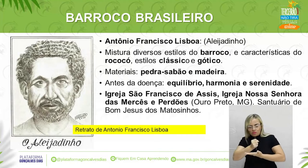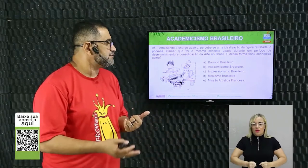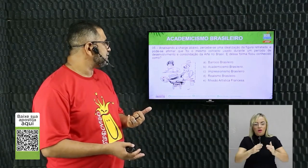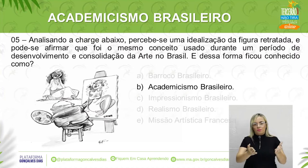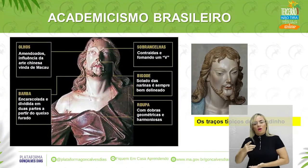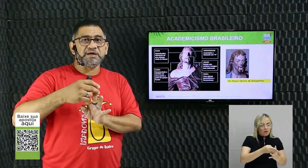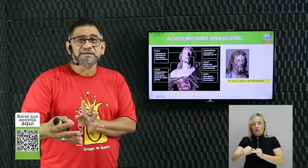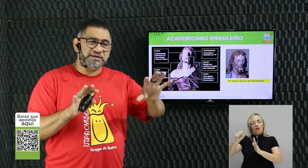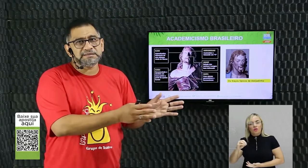Para entender o século XIX, é necessário revisar o barroco brasileiro — já gravamos essa revisão. Dom João VI, que não era a criatura mais valente da Europa, saiu fugido e veio para o Brasil em 1808, trazendo a corte portuguesa — uma média de 5 mil pessoas. Essa influência cultural europeia já estava estabelecida no Brasil.